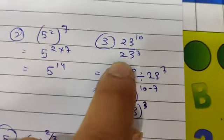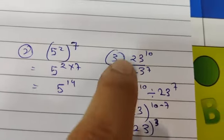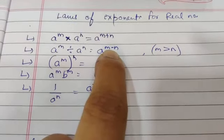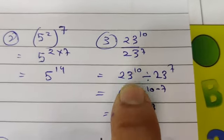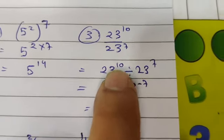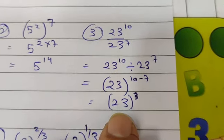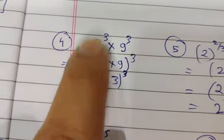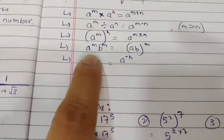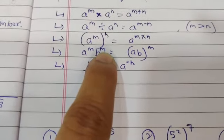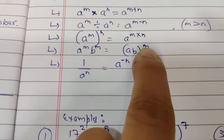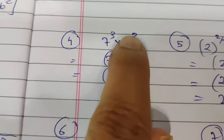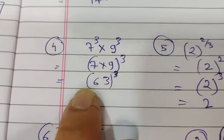Next question is 23 to the power 10 divided by 23 to the power 7 — bases are same, so we subtract powers to get 23 to the power 3. Next is 7 to the power 3 multiplied by 9 to the power 3 — different bases but the same power. So we take the power common and multiply the bases: 7 times 9 is 63, giving 63 to the power 3 as the answer.